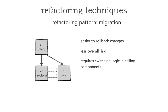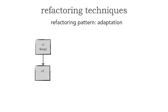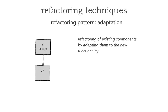Let's take a look at another refactoring pattern: adaptation. With adaptation, let's say we still have C1 which we're keeping, but we're adapting C2 — we're going to rewrite C2. This is a refactoring of existing components by essentially adapting them to new functionality, done in place. So we're refactoring C2 or replacing some of its code — in iteration 1 we replace a portion of C2, then iteration 2, iteration 3, until we're finally done with our refactoring effort.